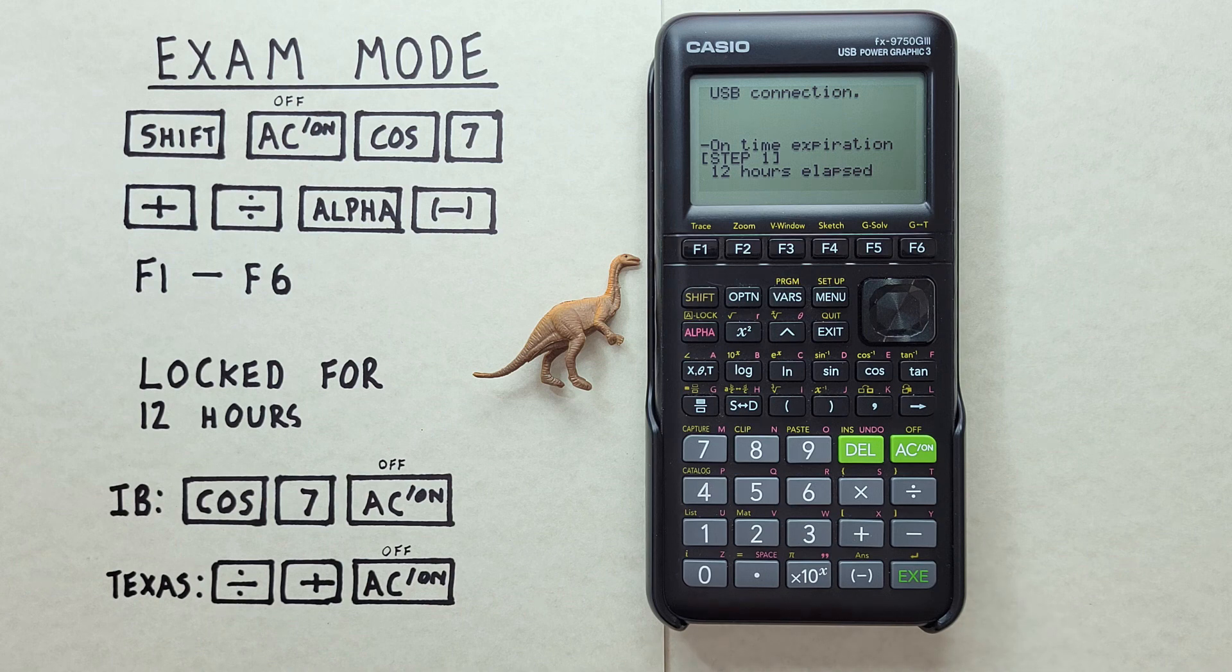And our final option for getting out of Exam Mode is to just let the 12 hours expire. If, when your calculator is in Exam Mode, you press the Reset button or try taking out the batteries and putting them back in, all that'll do is reset the Exam Mode countdown. So you'll still be in Exam Mode, and you'll have to wait another 12 hours.